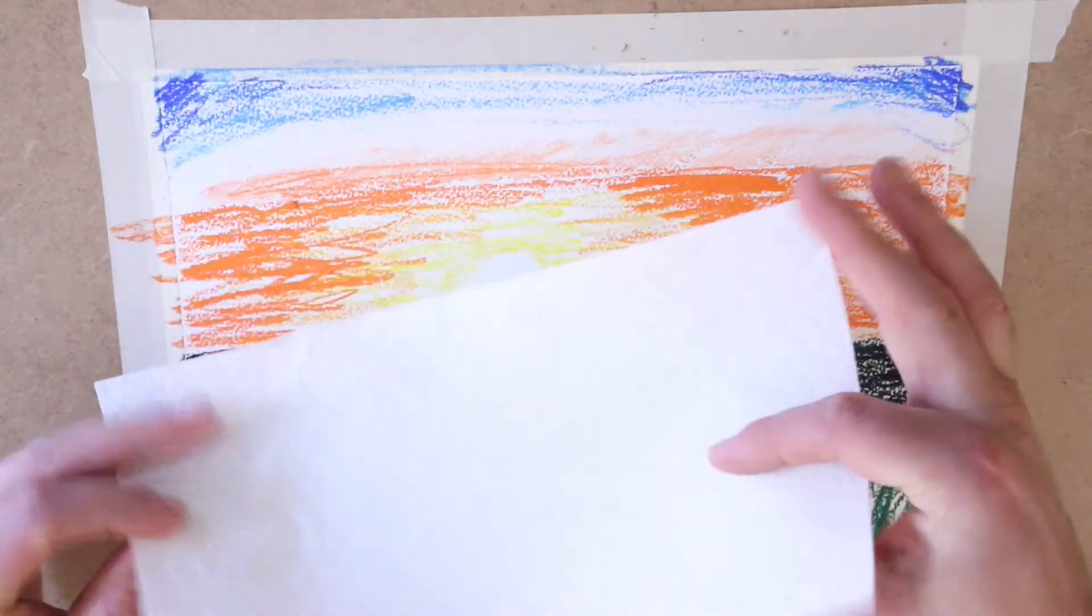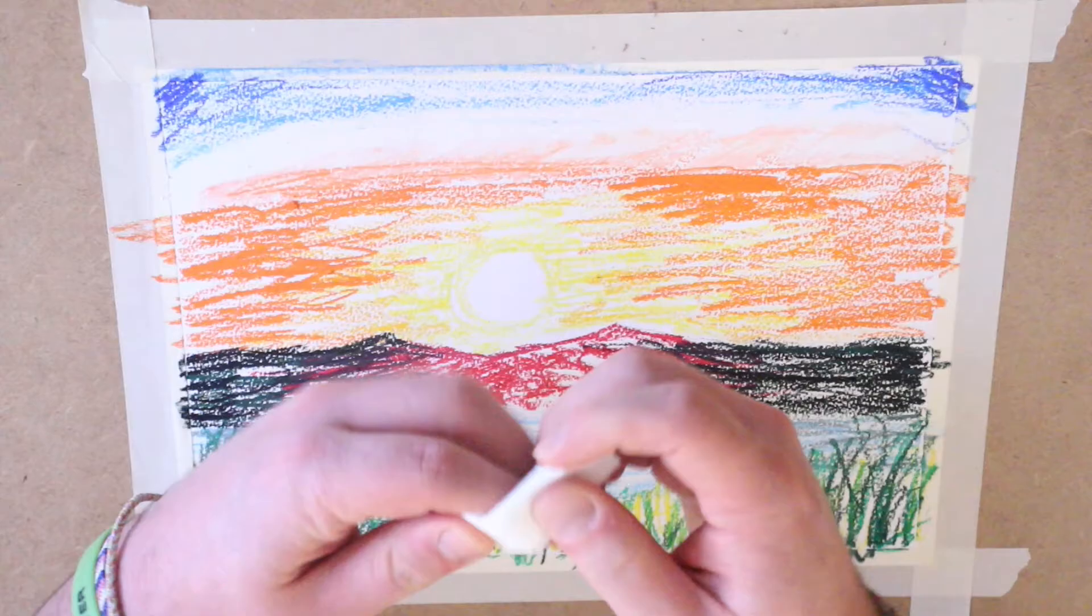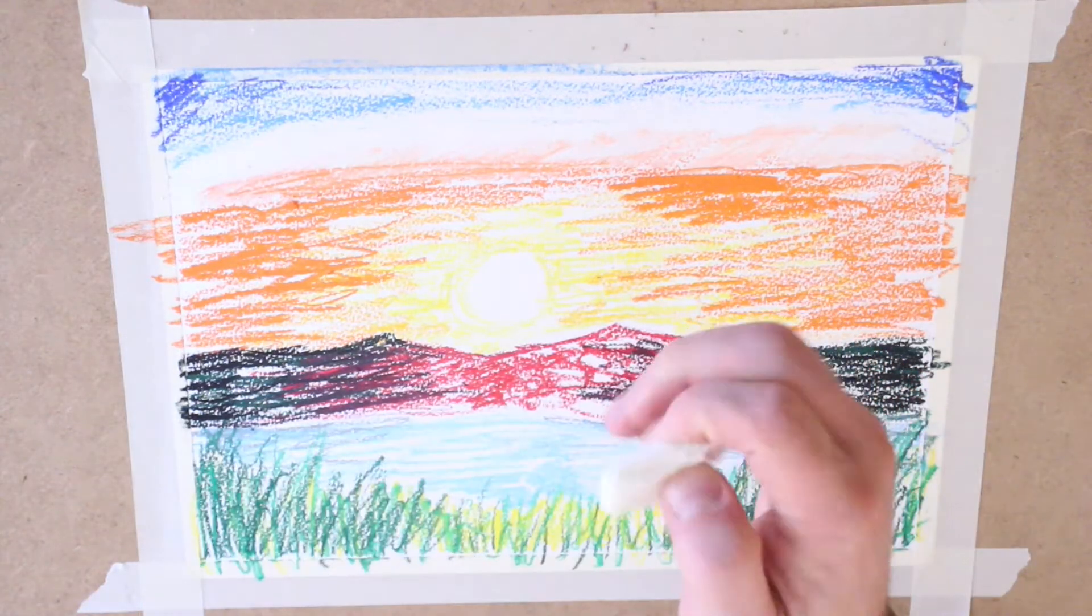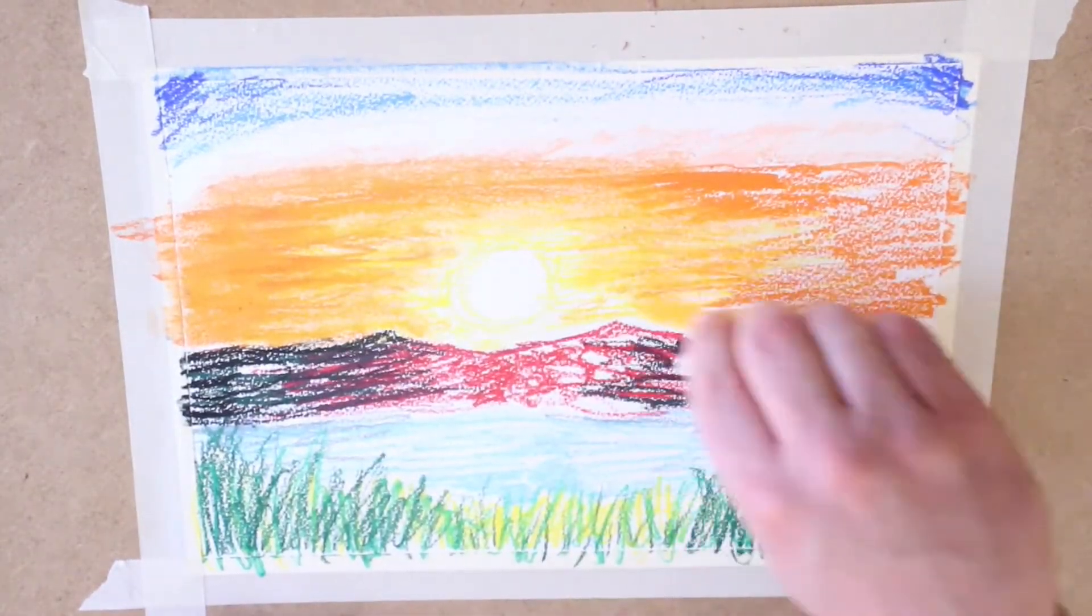Next, what you can do is grab a paper towel or a napkin. Oftentimes what I do is I fold it three or four times and then you can use that as a blending stick. You're going to go over all of your colors that you overlapped and you're going to blend those together.